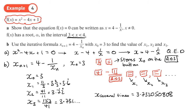It settles down to 3.732050808 — if I keep pressing equals it doesn't change. So very quickly I've found the root of the equation x squared minus 4x plus 1.